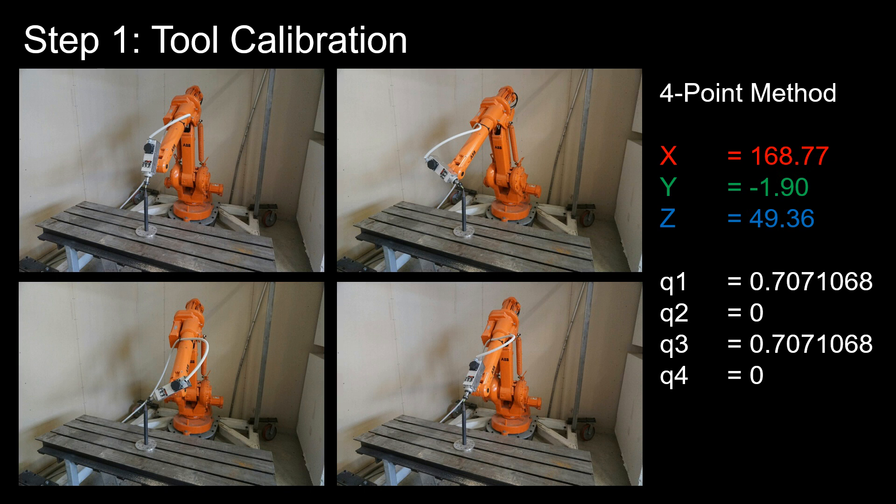In this case, the results are shown on the right here. The numbers here are in millimeters. So X equals 168.77 mm. That's the distance from the mounting flange of the robot to the tip of the ball nose tool in the X direction. The quaternion here, Q1 to Q4, represents that 90 degree rotation about the Y-axis.